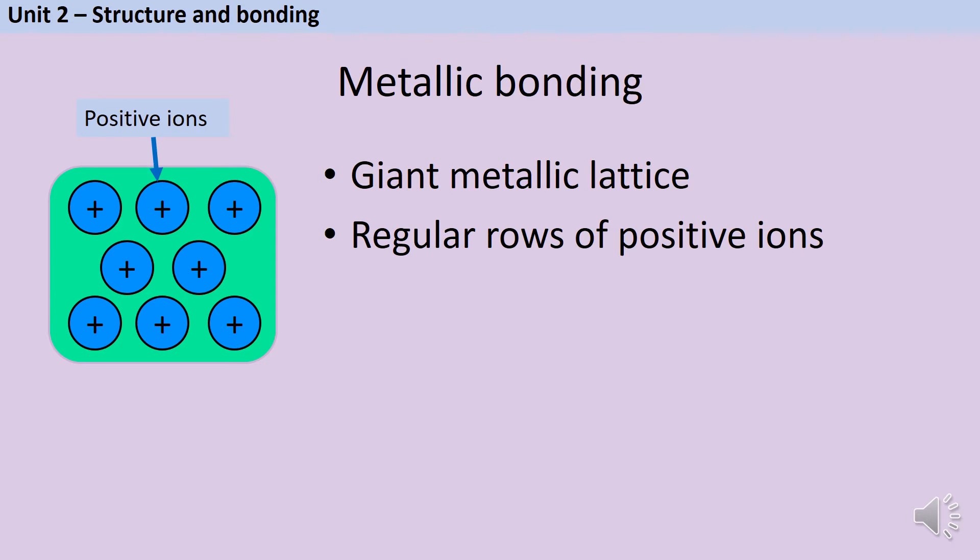Surrounding those regular rows of positive ions are the electrons that have been given up by each atom. They're not tied to one particular location anymore so we call them delocalised electrons. These form a sea around the positive ions.